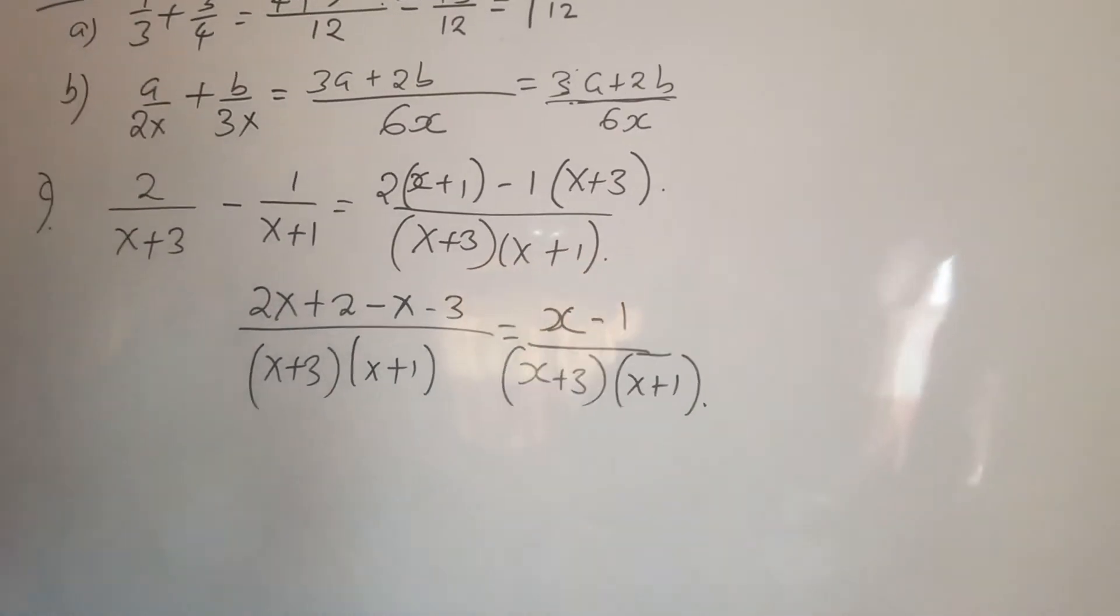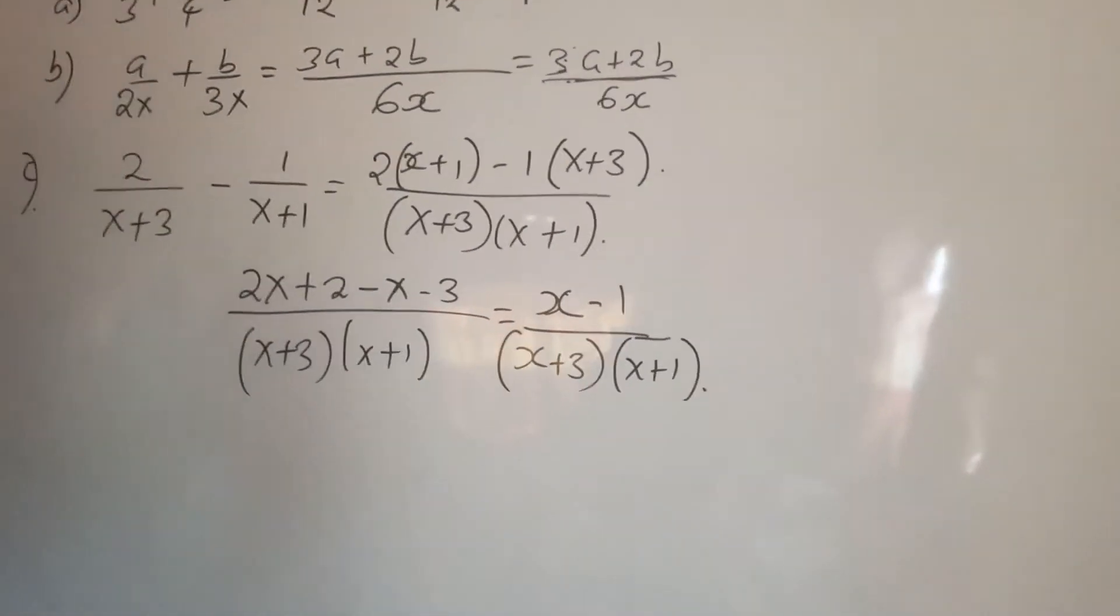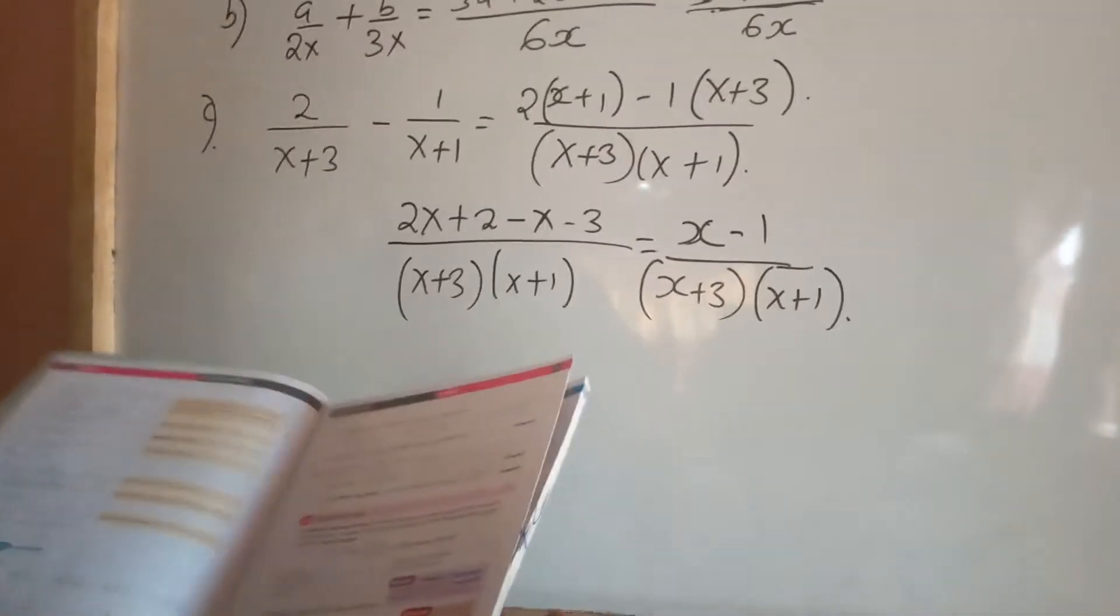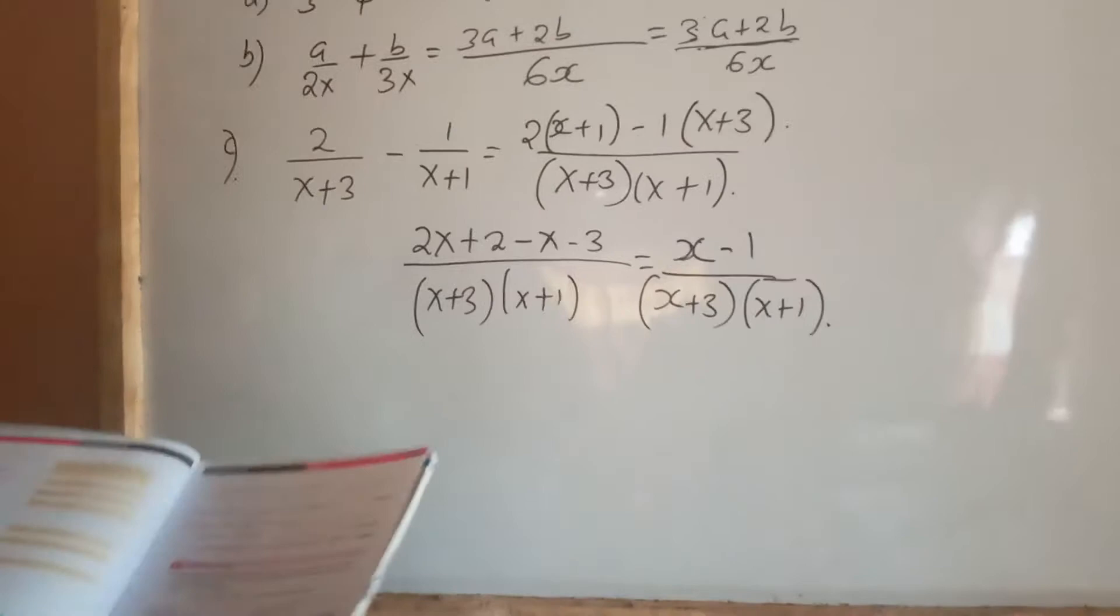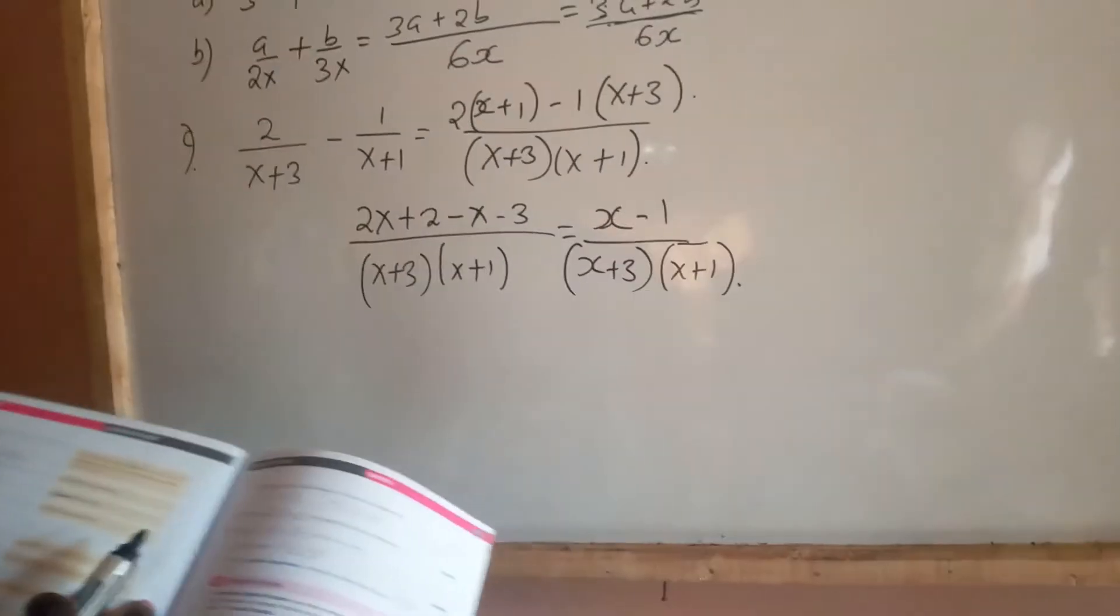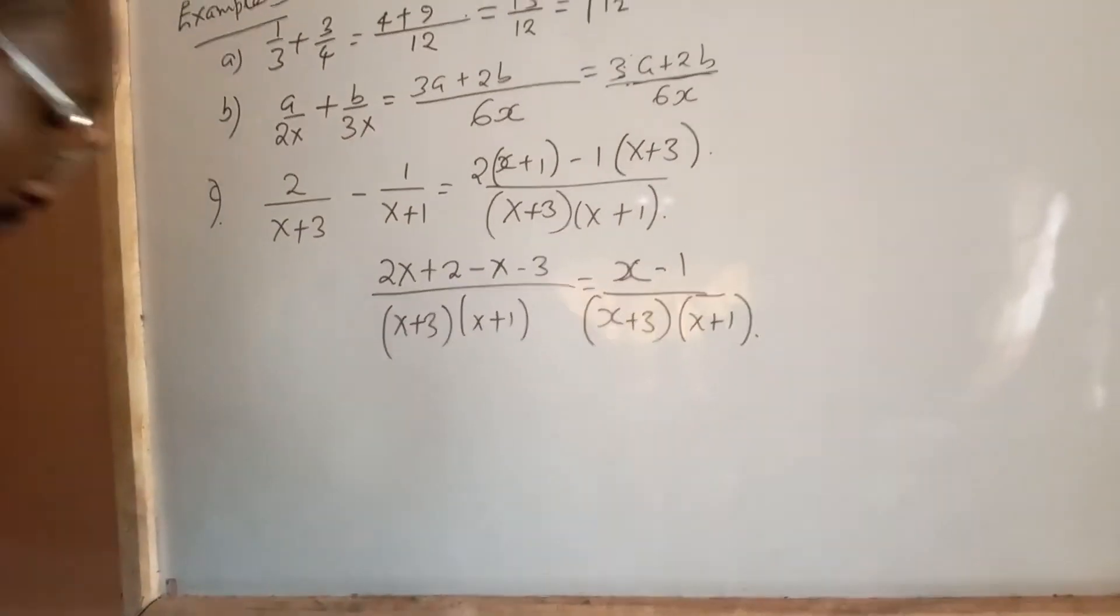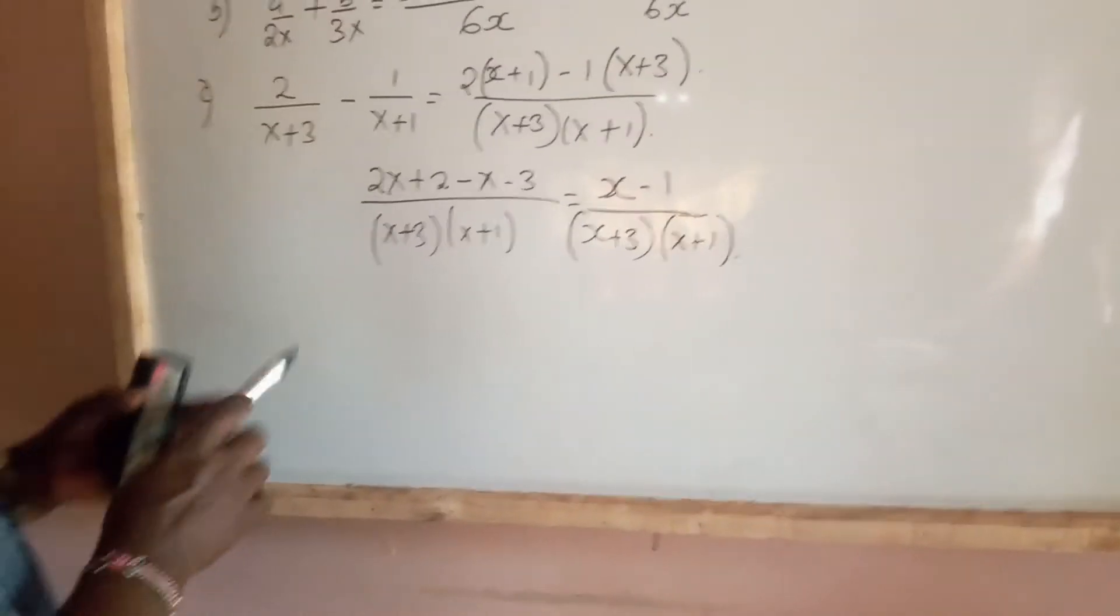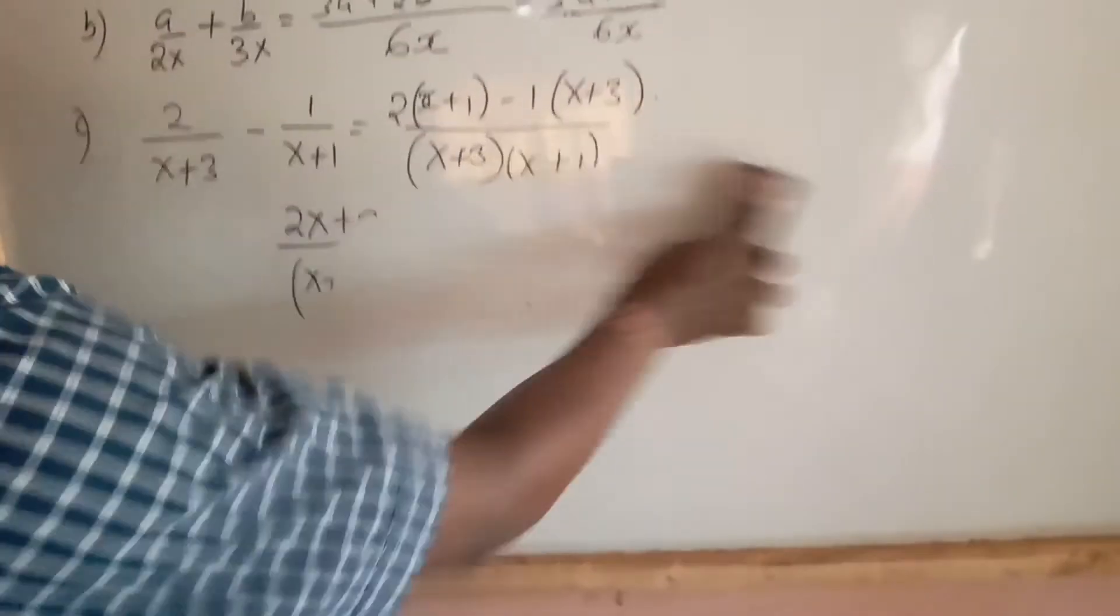That becomes the answer to that question: (x-1) over (x+3)(x+1). So I want us to look closely at part D.